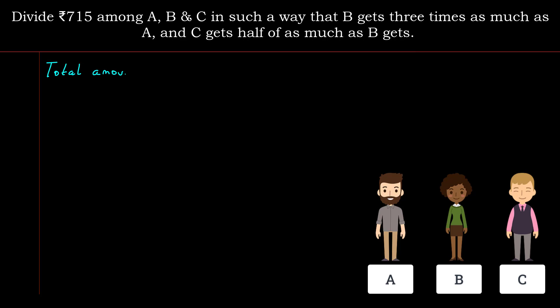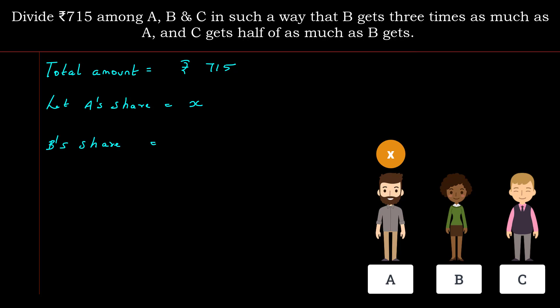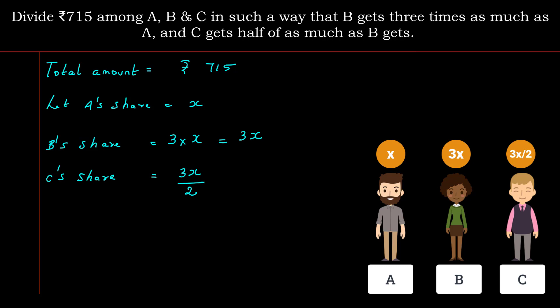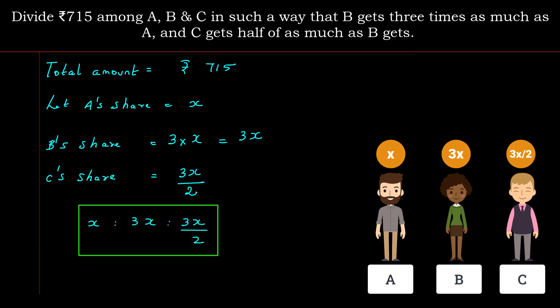Total amount is Rs. 715. Since the ratio is not given directly, let A's share be X. B gets 3 times as much as A, so B's share is 3X. C gets half of what B gets, so C's share is 3X/2. The ratio of A : B : C is X : 3X : 3X/2, which is a fractional form.